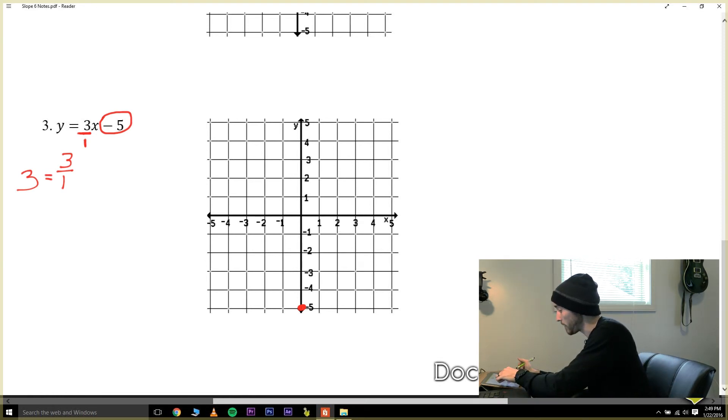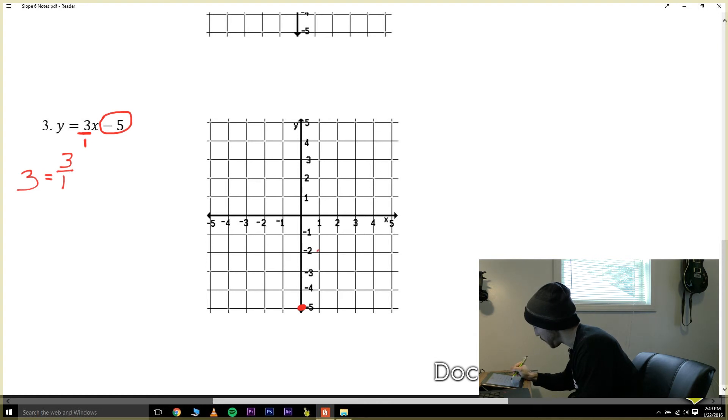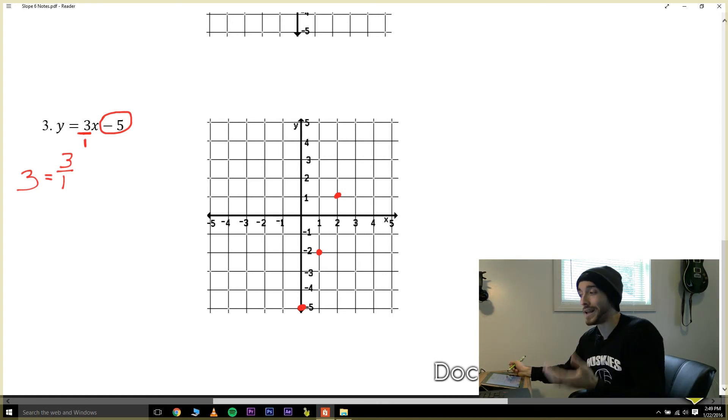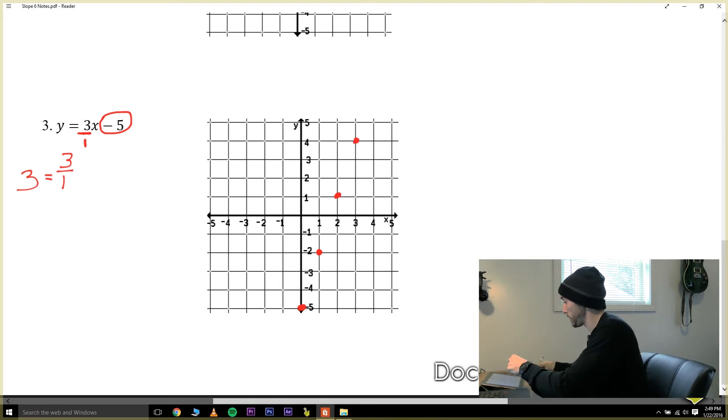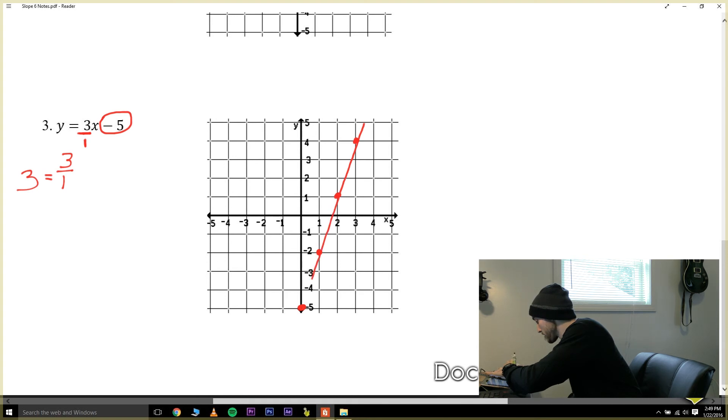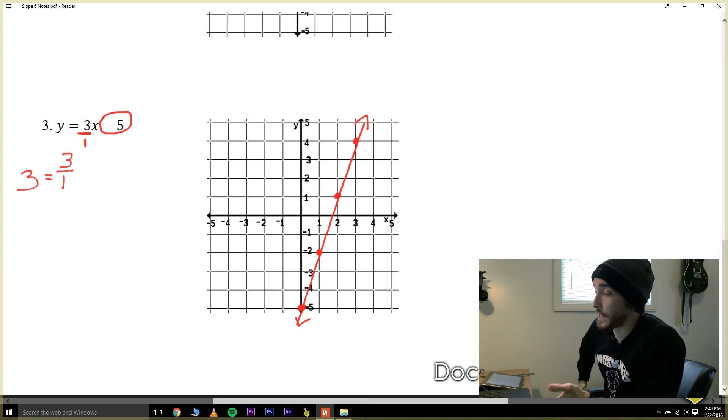We already have our first dot down here at negative five but from there we're going to count up three and right one. Now since I have room on my graph I'm going to count up three and right one from that dot that I just made. Do I have to do that? No. But when I go to draw my line now I'm connecting it through all three of them and it helps you because sometimes you can get off a little bit and it can make the line go to the wrong places. In fact I could probably fit another one from that point up three and right one. Now I've got a bunch of points and I can draw a line. So now we've drawn a line that has a slope of three and a y-intercept of negative five.